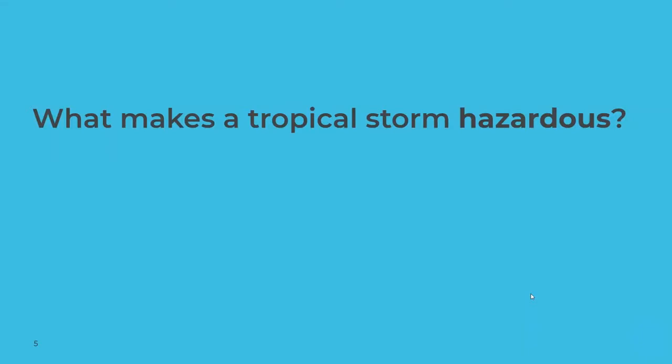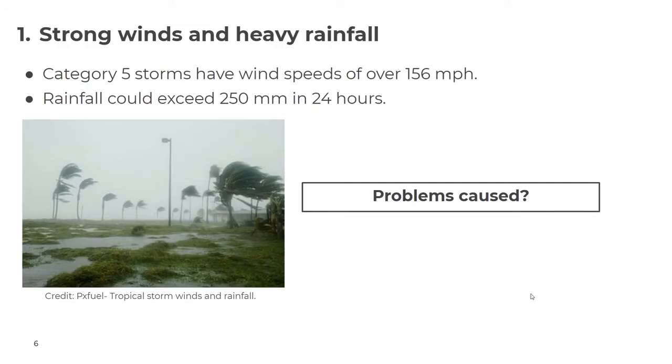Before we look at the effects of tropical storms in detail, let's consider: what makes a tropical storm hazardous? Tropical storms are natural events; they become a natural hazard because they come into contact with human beings. The most obvious hazards are strong winds and heavy rainfall. Category five storms have wind speeds of over 156 miles per hour and often produce rain exceeding 250 millimetres in 24 hours. These hazards can cause several problems for people and the environment.